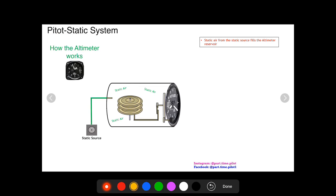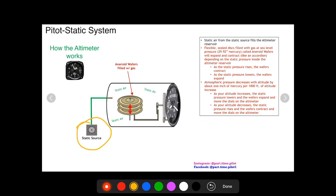So how does the altimeter work? First off, you have a static source of air. The static source comes in and fills the altimeter chamber up with static air. Static air fills the whole thing up.